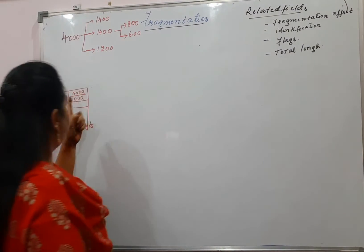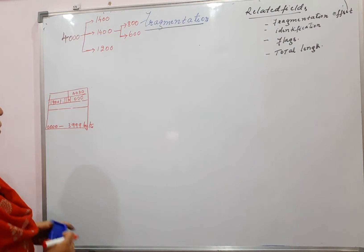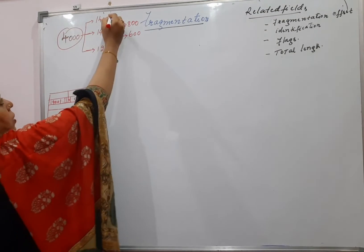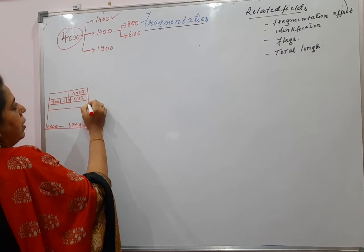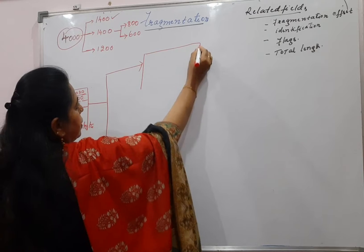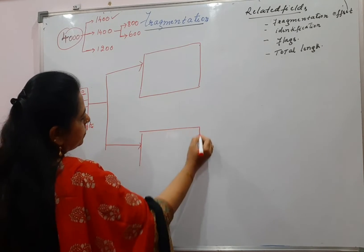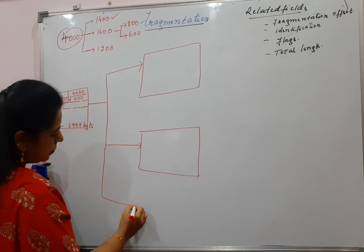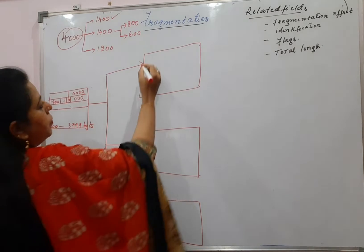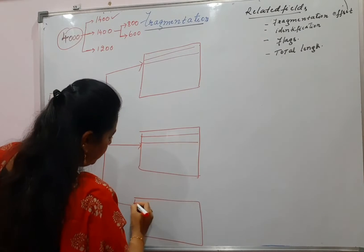The related fields you write down every time: total length, identification, flag, and the offset value. Offset in this is 0. Now we have completed this part. Let us fill the values for the first fragment. We have to show all three fragments, so let me write the diagram. These are the three fragments. We will only focus on the fields related to fragmentation and fill them now.